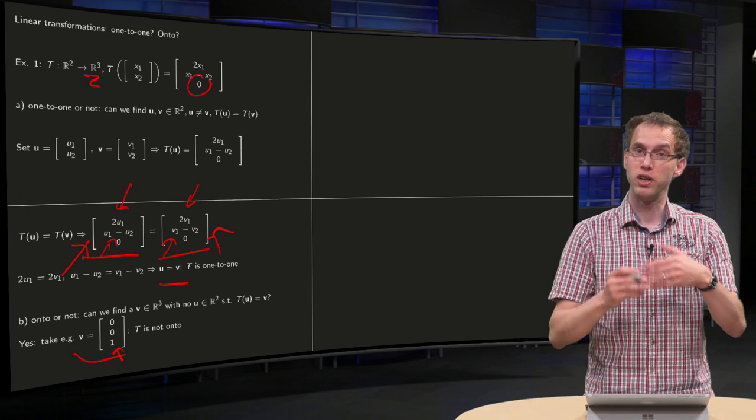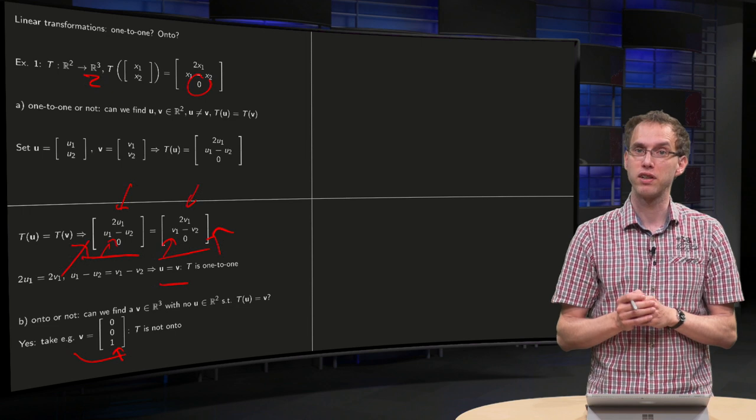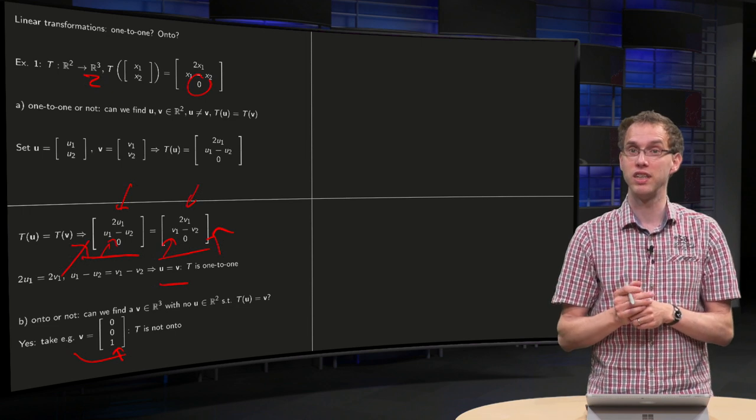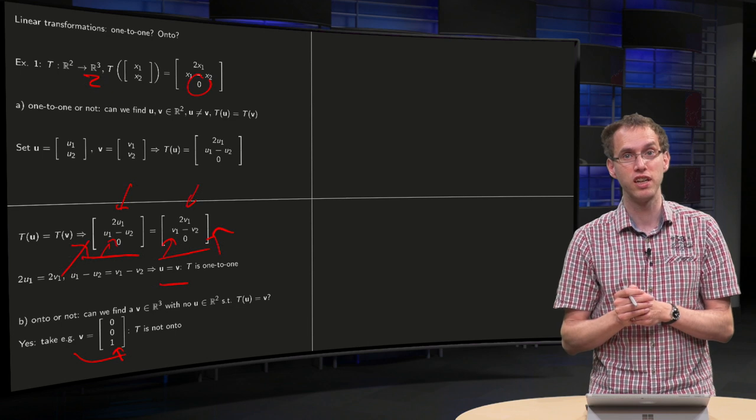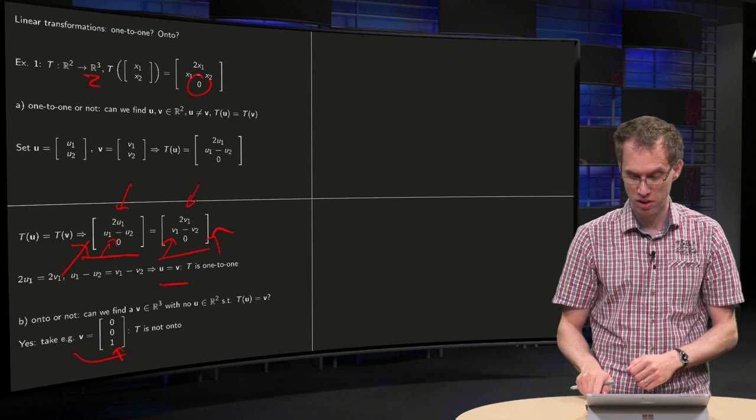You won't be able to reach v, or (0, 0, 2), or (1, 0, 1), or any vector with a non-zero last component. That means you cannot reach all vectors in the codomain, which means that the transformation T is not onto.